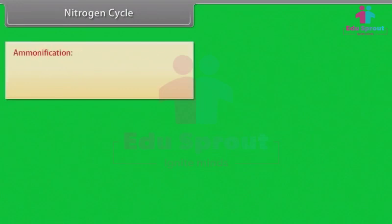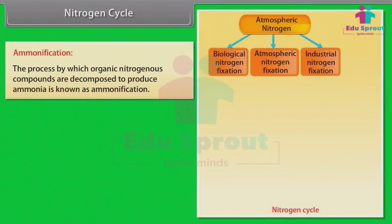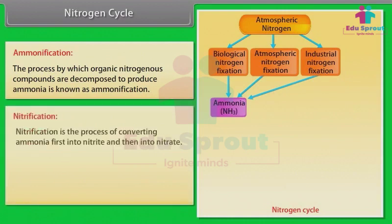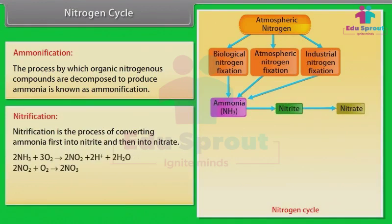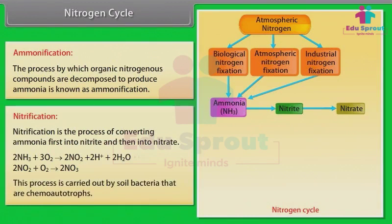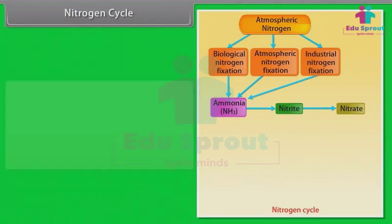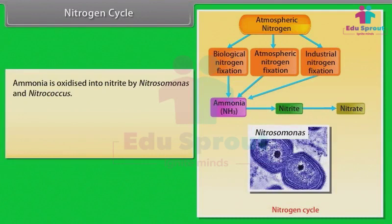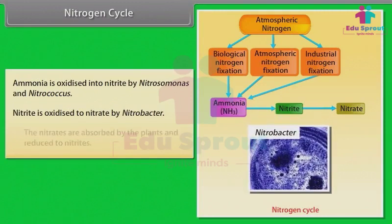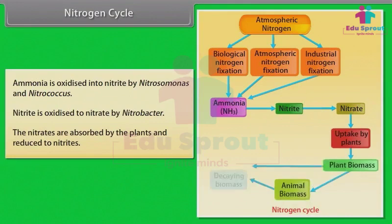Ammonification is the process by which organic nitrogenous compounds are decomposed to produce ammonia. Nitrification is the process of converting ammonia first into nitrite and then into nitrate: 2NH₃ + 3O₂ → 2NO₂⁻ + 2H⁺ + 2H₂O; 2NO₂⁻ + O₂ → 2NO₃⁻. This process is carried out by soil bacteria that are chemo-autotrophs. Ammonia is oxidized into nitrite by Nitrosomonas and Nitrococcus; nitrite is then oxidized to nitrate by Nitrobacter. The nitrates are absorbed by plants and reduced to nitrites.